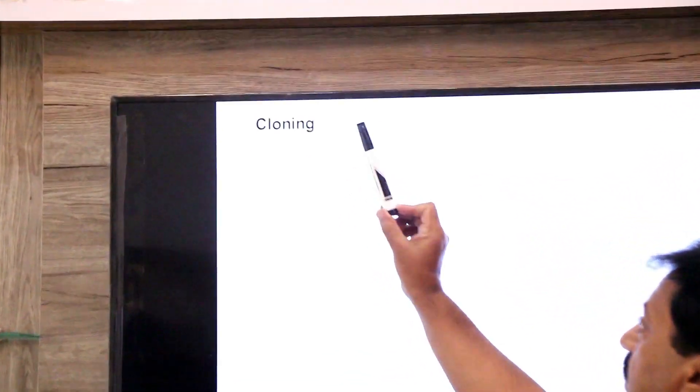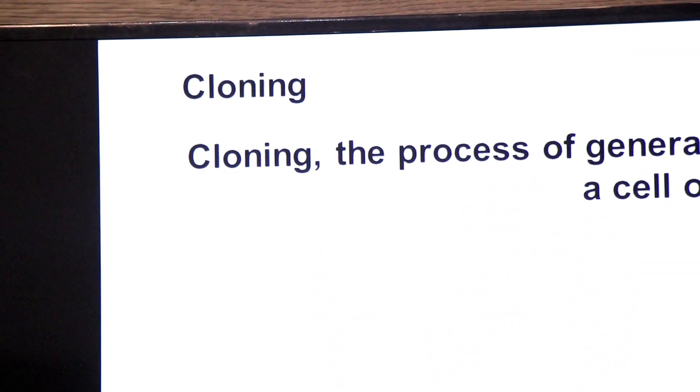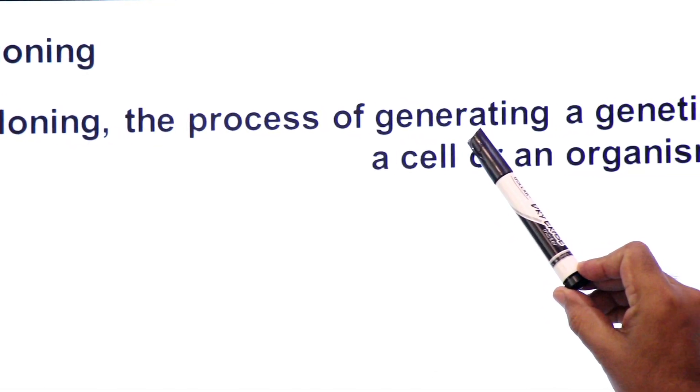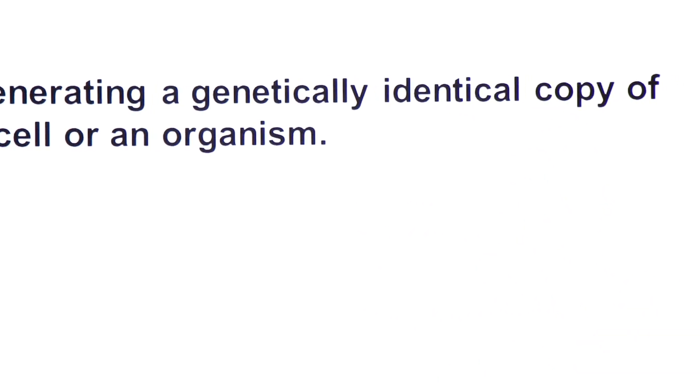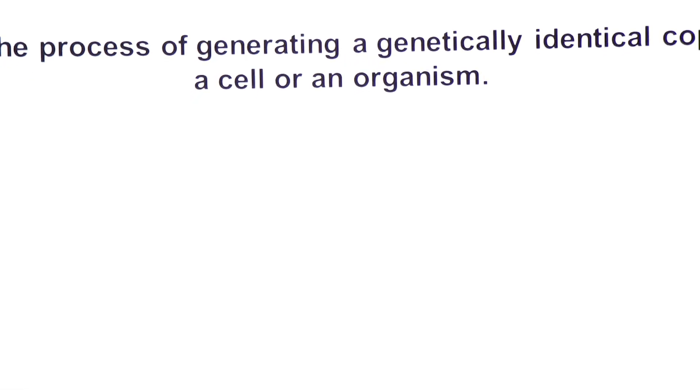Assalamu alaikum, namaskar dear students. Today we are going to talk about cloning — the process of cloning. First, the definition: cloning is the process of generating a genetically identical copy of a cell or an organism. If we produce a duplicate genetically identical copy of a cell, it is called cell cloning. If we produce a genetically identical copy of a whole organism, it is called organism cloning.